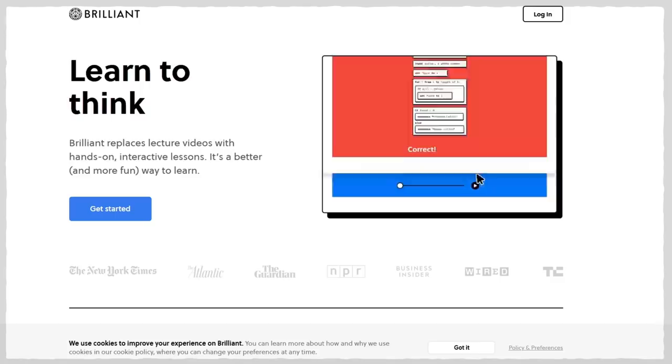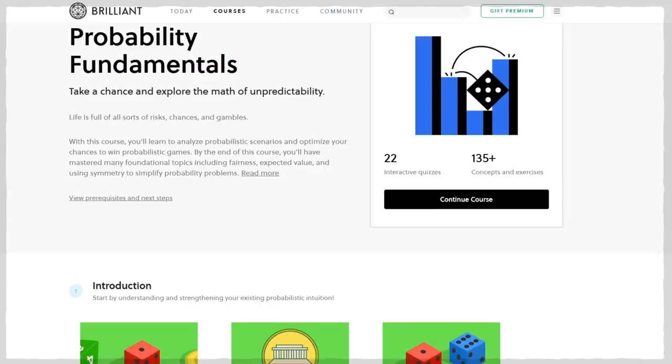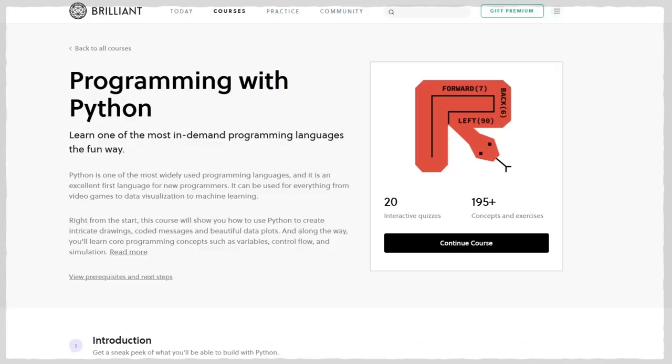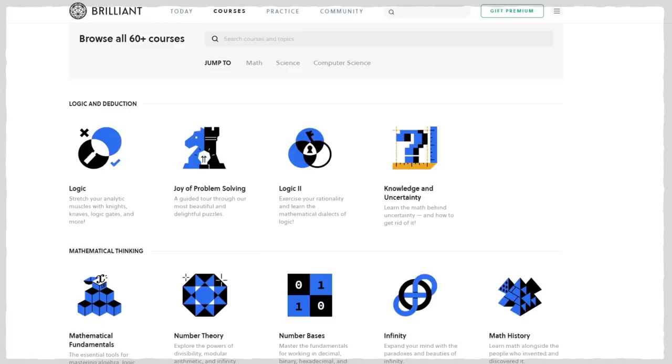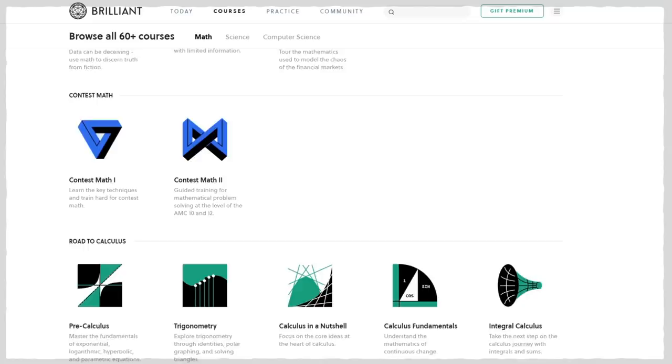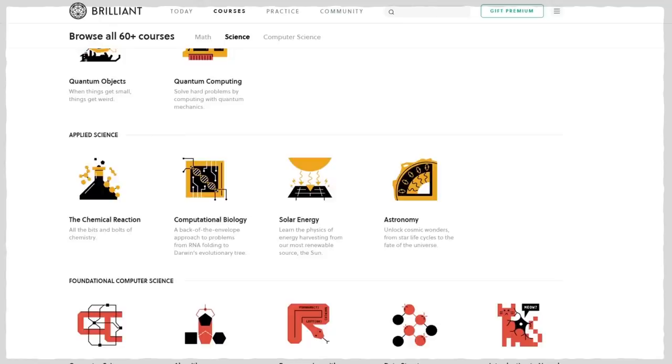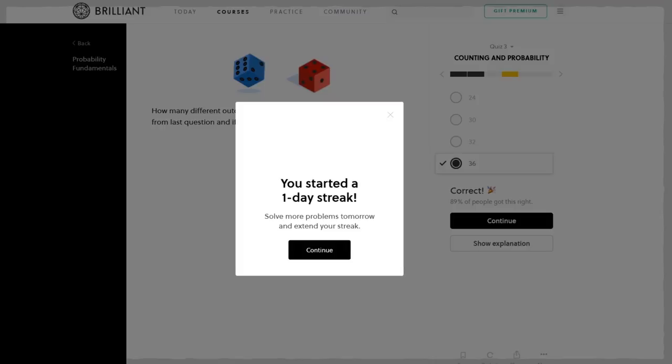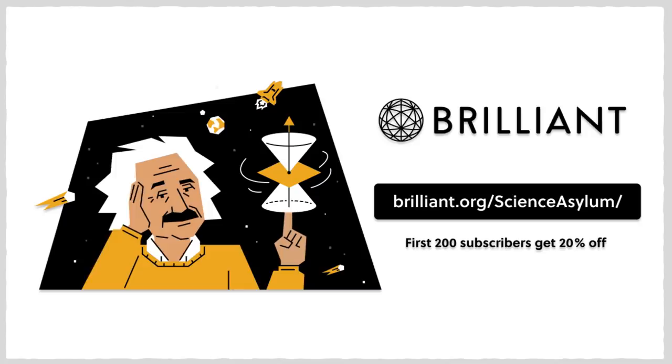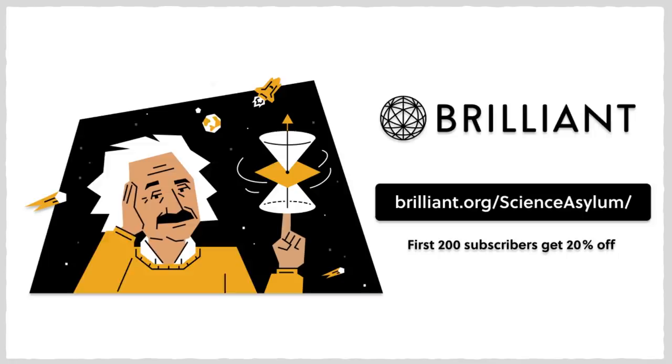Want to learn something new this year? Then check out Brilliant. It's a website and app that makes learning interactive, accessible, and fun. I'd recommend starting with Probability Fundamentals where you can get used to counting outcomes before you move on to the harder stuff. They even have a course called Programming with Python if that's what attracted you to my video. With over 60 courses to choose from, there's something for everyone. These courses are laid out like a story and broken into pieces so you can tackle them one bit at a time. If you really want to learn something and have it stick, then you need practice. Does this sound like a service you'd like to use? If so, go to Brilliant.org slash Science Asylum so they know you heard about them from me. They're also offering the first 200 of you 20% off an annual subscription.